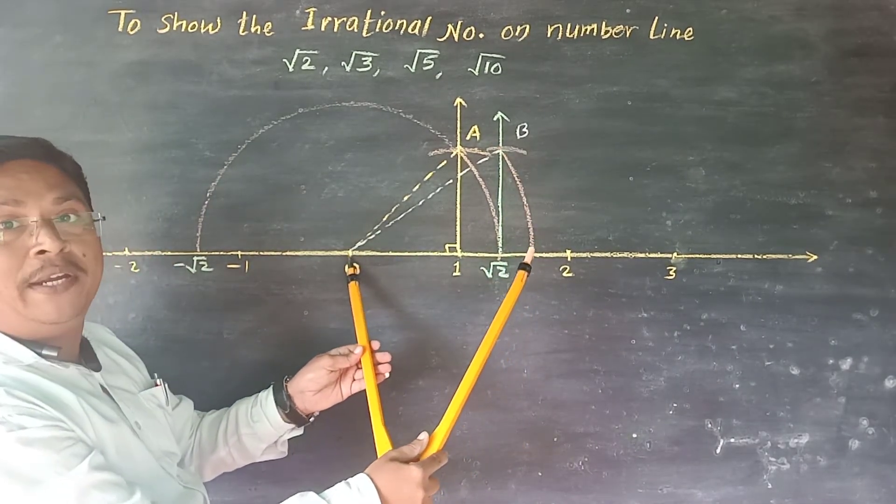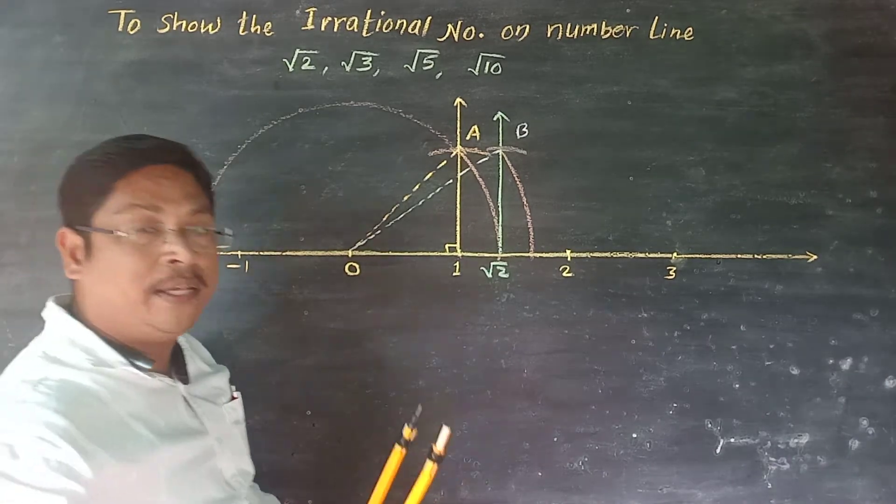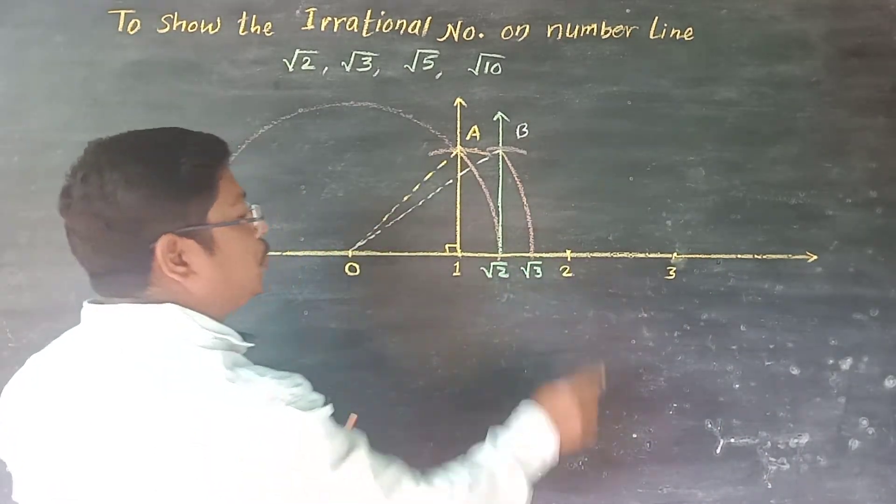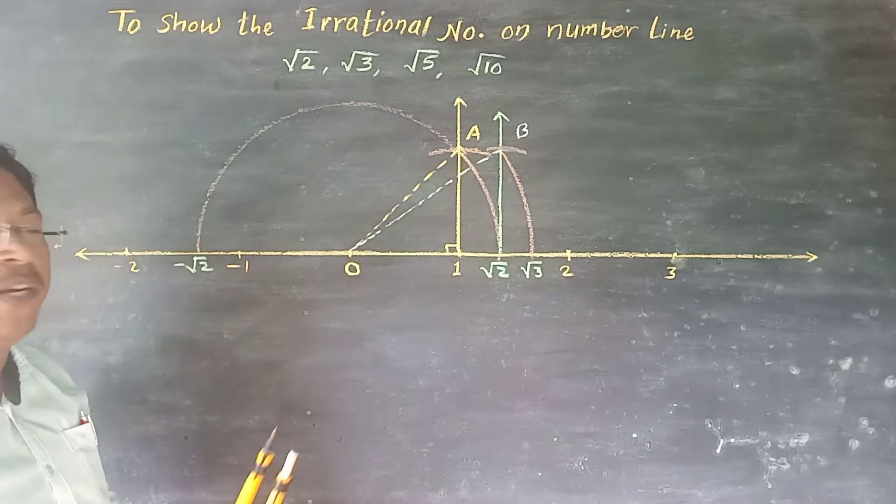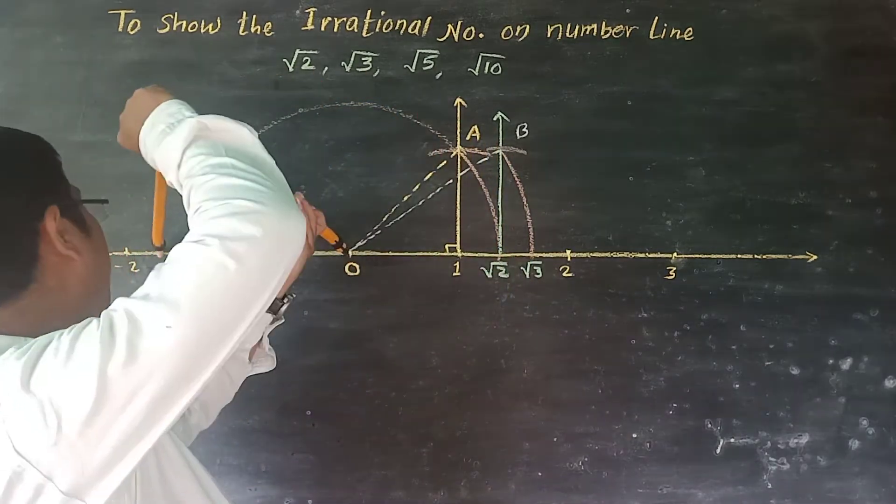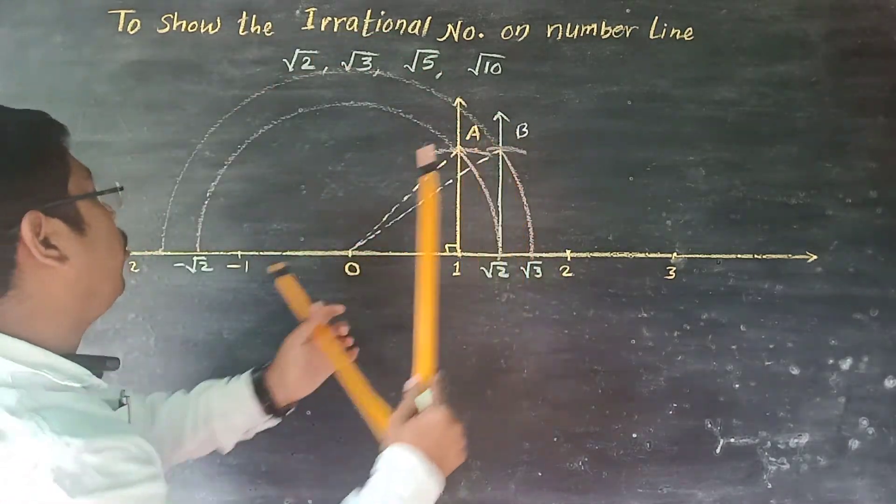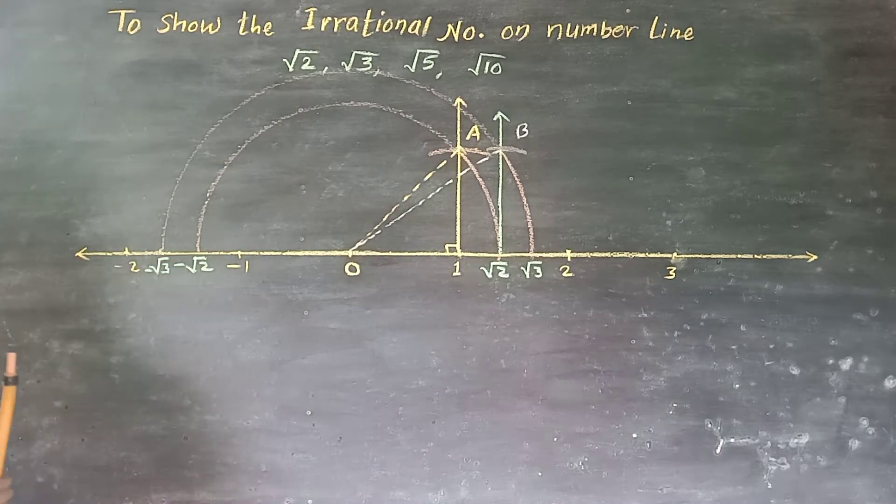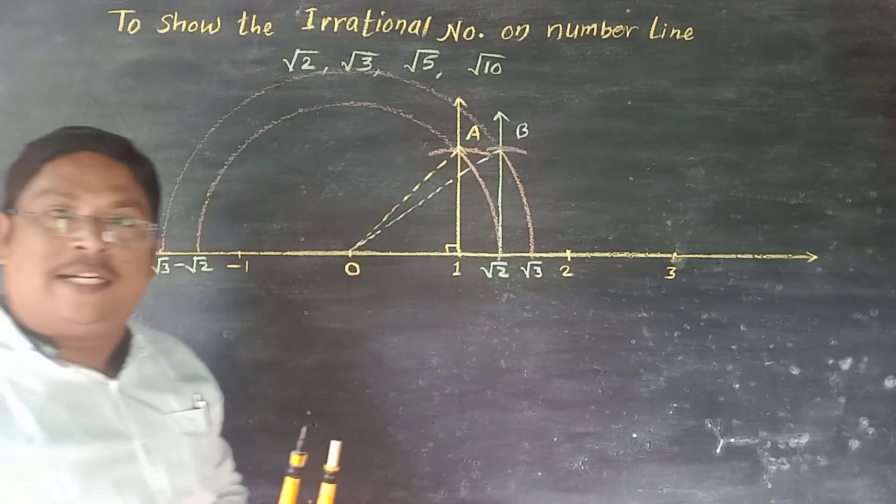Here we get the point. The point we have is root three. We get the point root three. This distance creates the value, and here we get the point equal to root three. This value is negative root three. Understand?